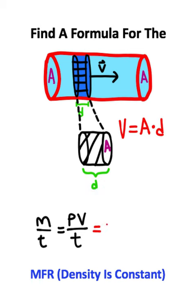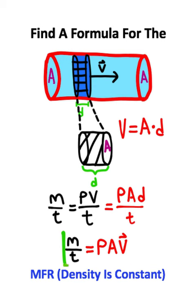So the mass flow rate formula becomes density times area times displacement over time. And displacement over time is the same thing as velocity. So this right here is the formula for the mass flow rate.